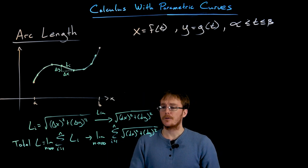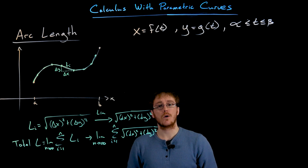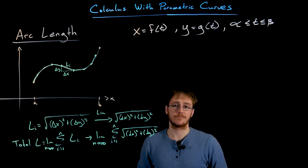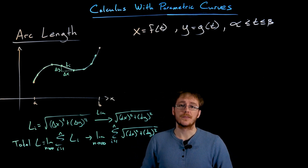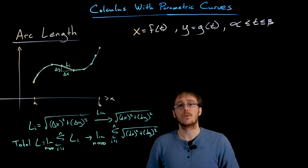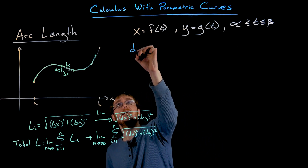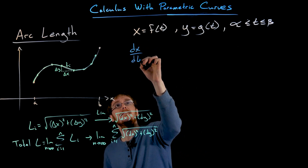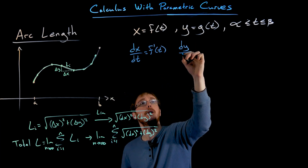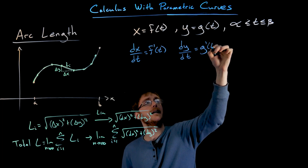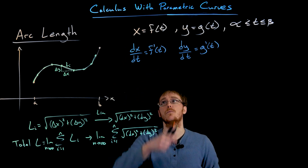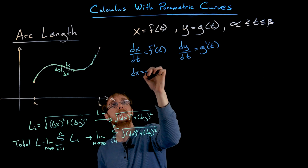Now we need to express the differential of X and the differential of Y in terms of the functions that describe our parameterized curve. The process is basically the same as when we found the area enclosed by a parameterized curve. If we differentiate X with respect to T we get F prime of T, and differentiating Y with respect to T gives G prime of T. From these derivatives we isolate DX and DY by multiplying both sides by DT.